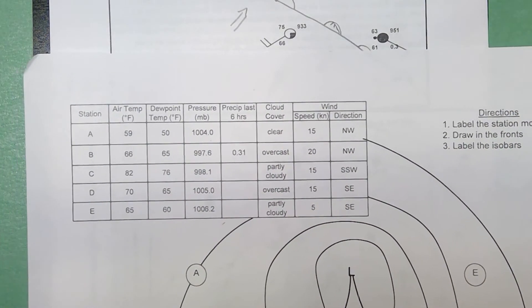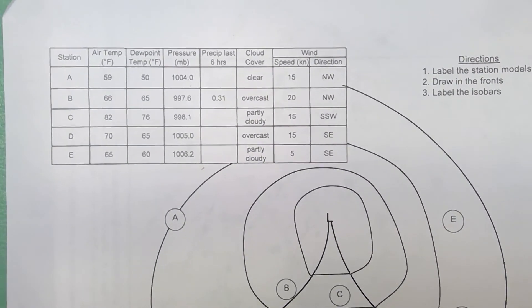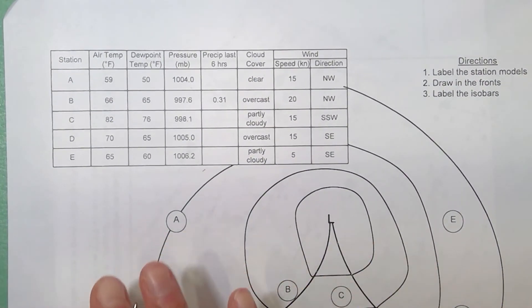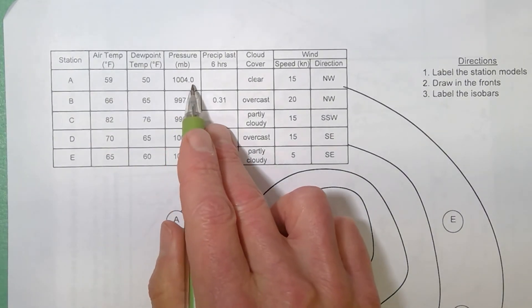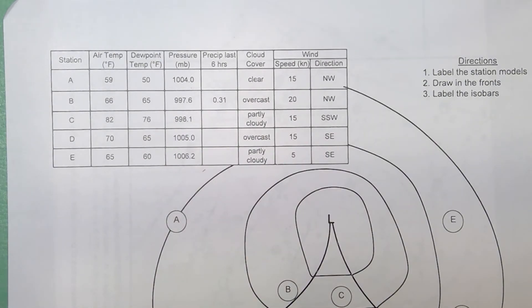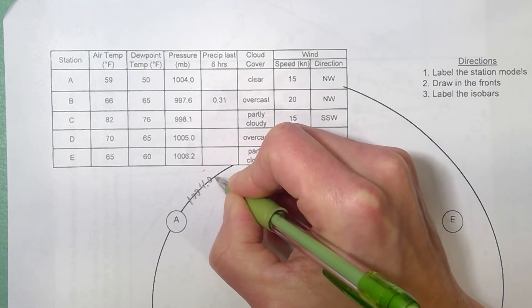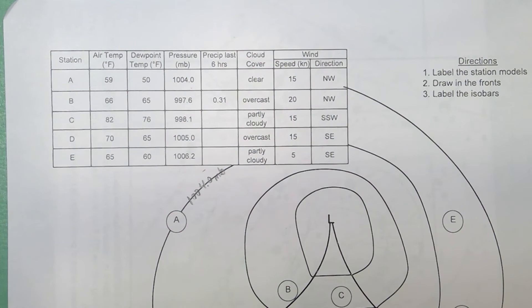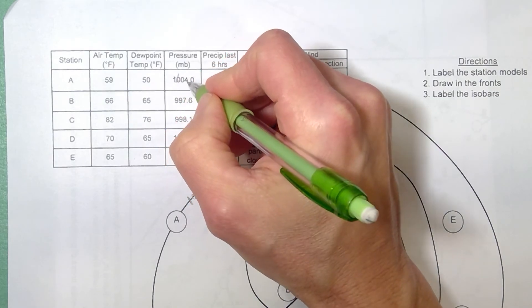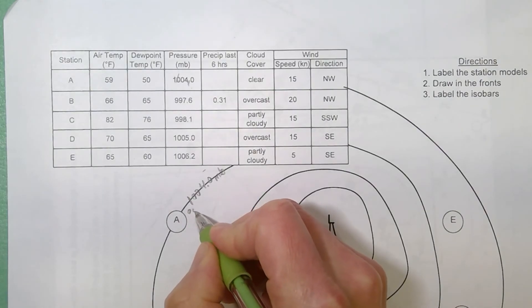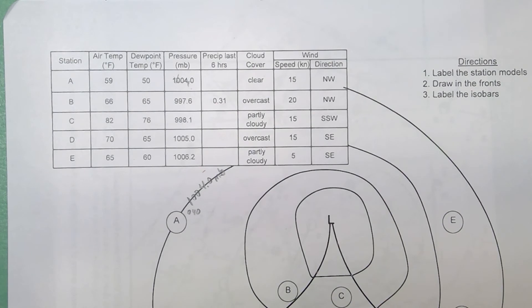Flipping this over, the last part of this activity is asking you to draw five complete station models and then label the fronts and the isobars afterwards. The only isobar that we definitely know is the one for 1004.0 for station A. So station A here, I would automatically label that as 1004.0 millibars. Honestly, you should know that you're going to drop the 10 and drop this, so this would be 040 as recorded on the station model.